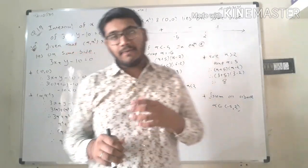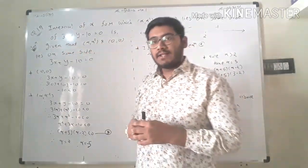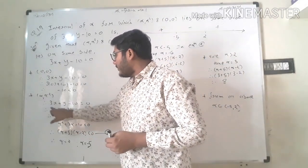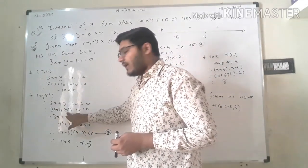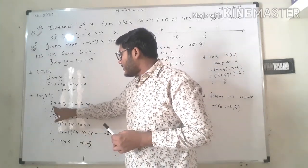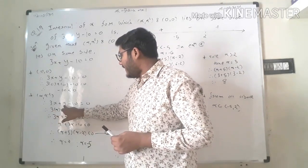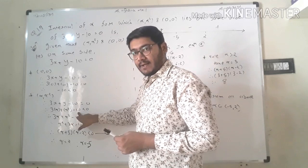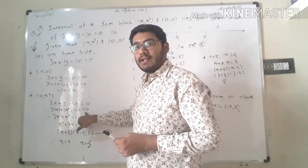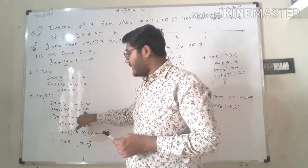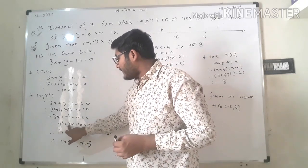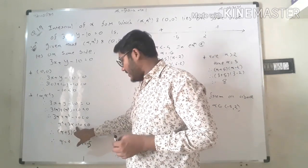Now we put the value of (alpha, alpha squared) into the equation. So x = alpha and y = alpha squared, giving us 3·alpha + alpha squared minus 10. Since it must lie on the same side, this value is also less than zero. So we get alpha squared + 3·alpha minus 10 < 0.